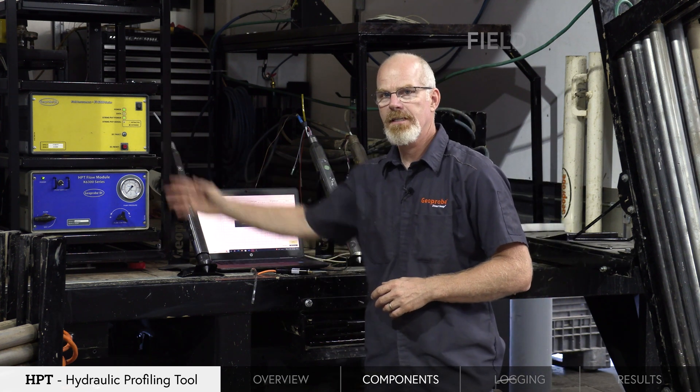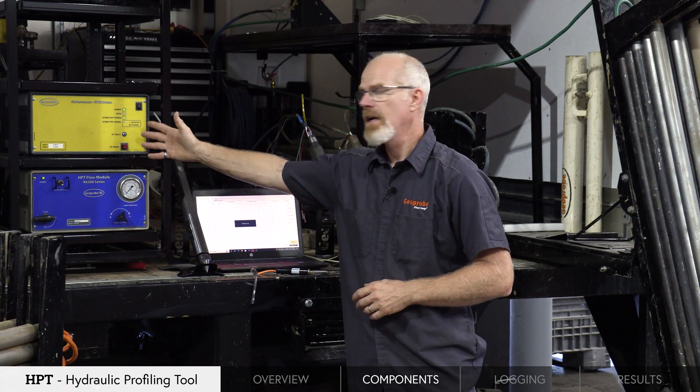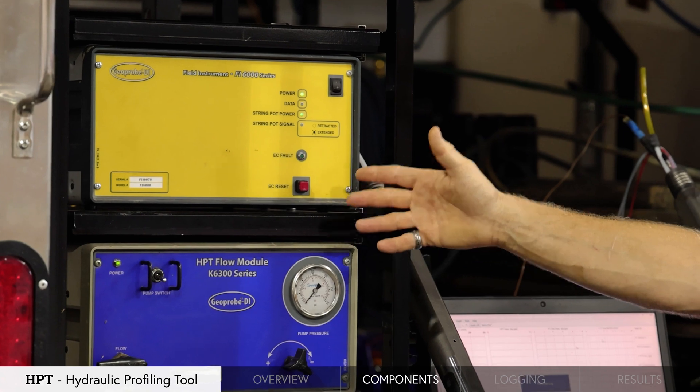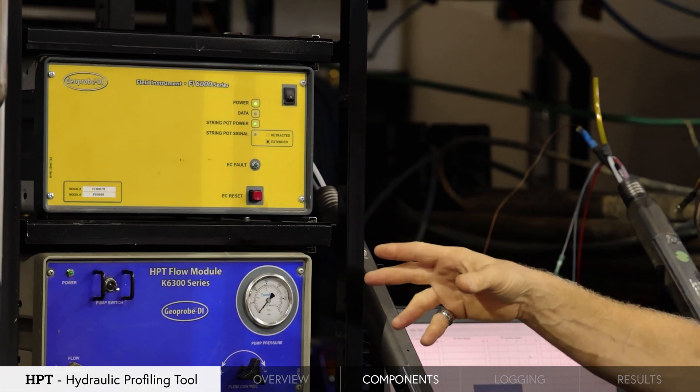We also have the field instrument, which is collecting the data from the HPT controller. This is also operating our electrical conductivity. It's got the circuit board for that and outputs the voltage and collects all the data and transfers that to our field laptop.